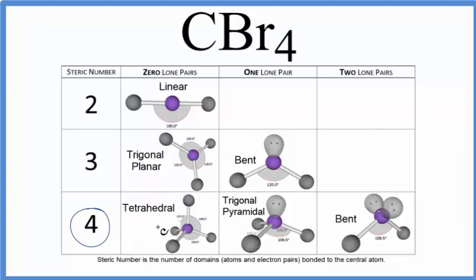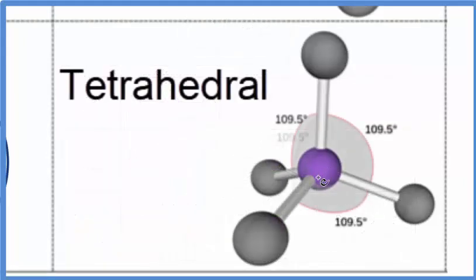If you were going to write the AXN notation, you could look at it this way. Your central atom, the carbon, that would be A. Each of these would be X, and there's no lone pairs, so we don't have anything for N. We would say it's A, X, one, two, three, four, AX four.